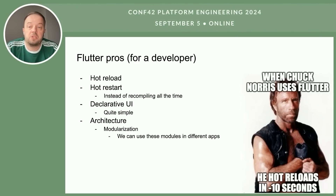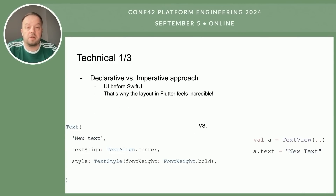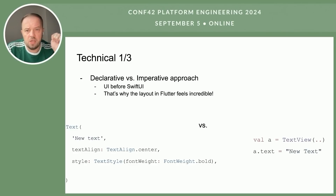Flutter uses declarative UI for laying out widgets. It looks quite simple and clean, and is much easier than doing layout in code in iOS — at least it used to be before SwiftUI. From an architectural point of view, it's also quite convenient. It's very easy to modularize the app and make each feature in a different module or component, which you can reuse in different parts of the app or even in different projects. You can see the difference between declarative and imperative approaches — on the left we have Flutter's declarative approach, and on the right the imperative approach used in iOS before SwiftUI.